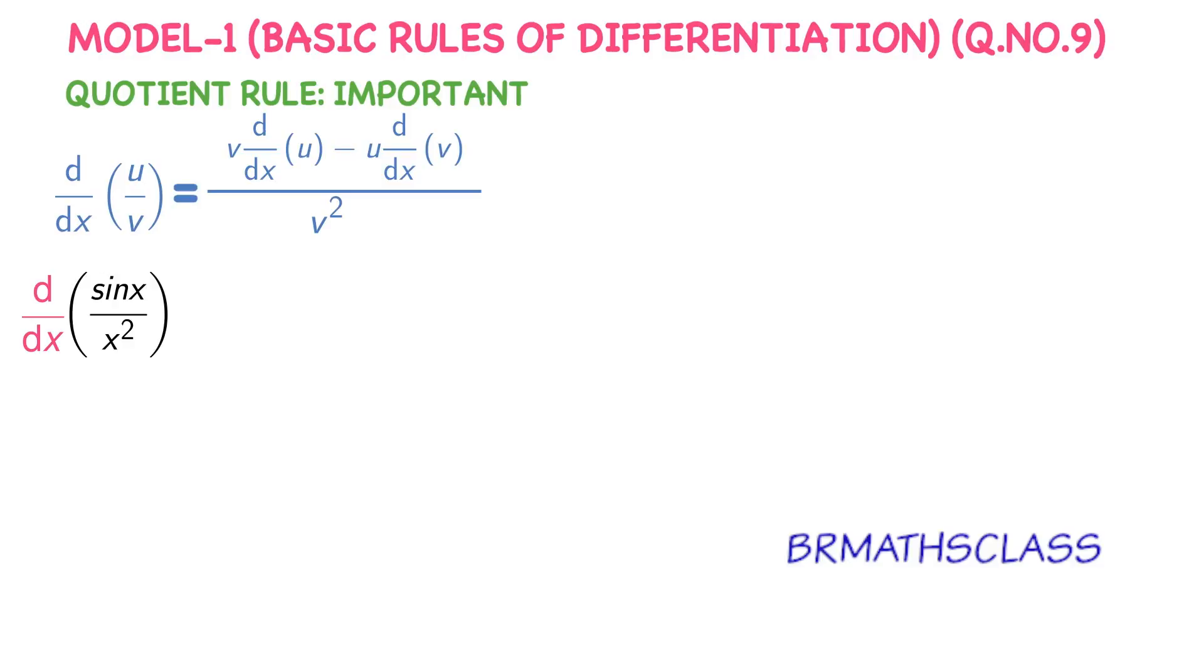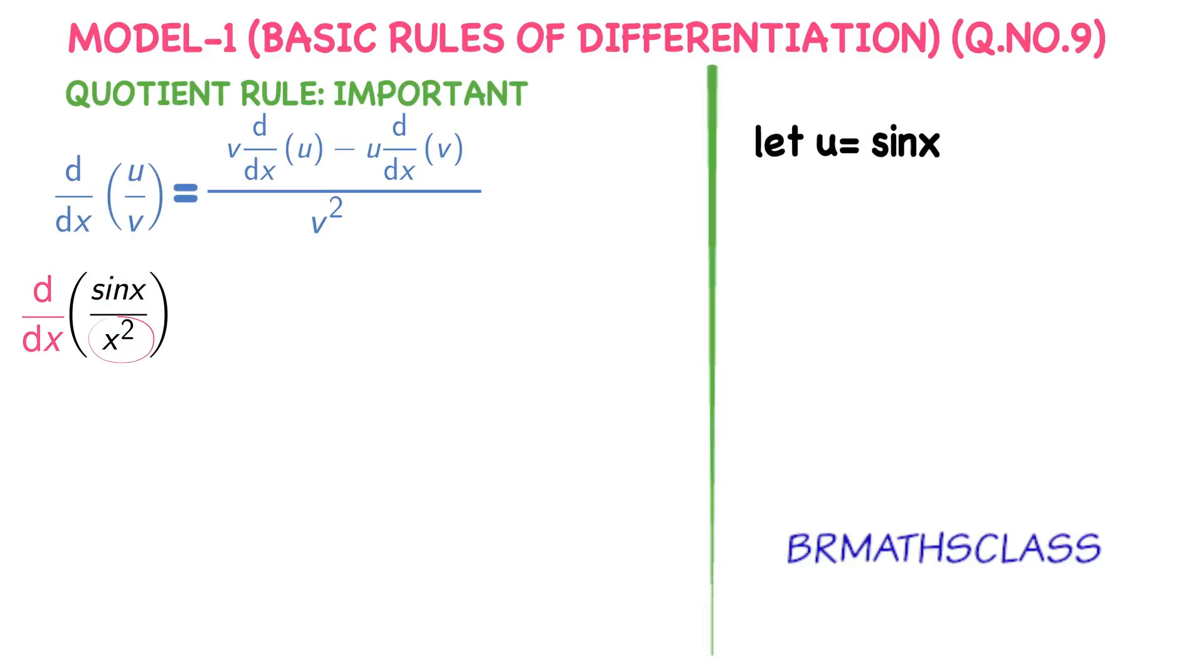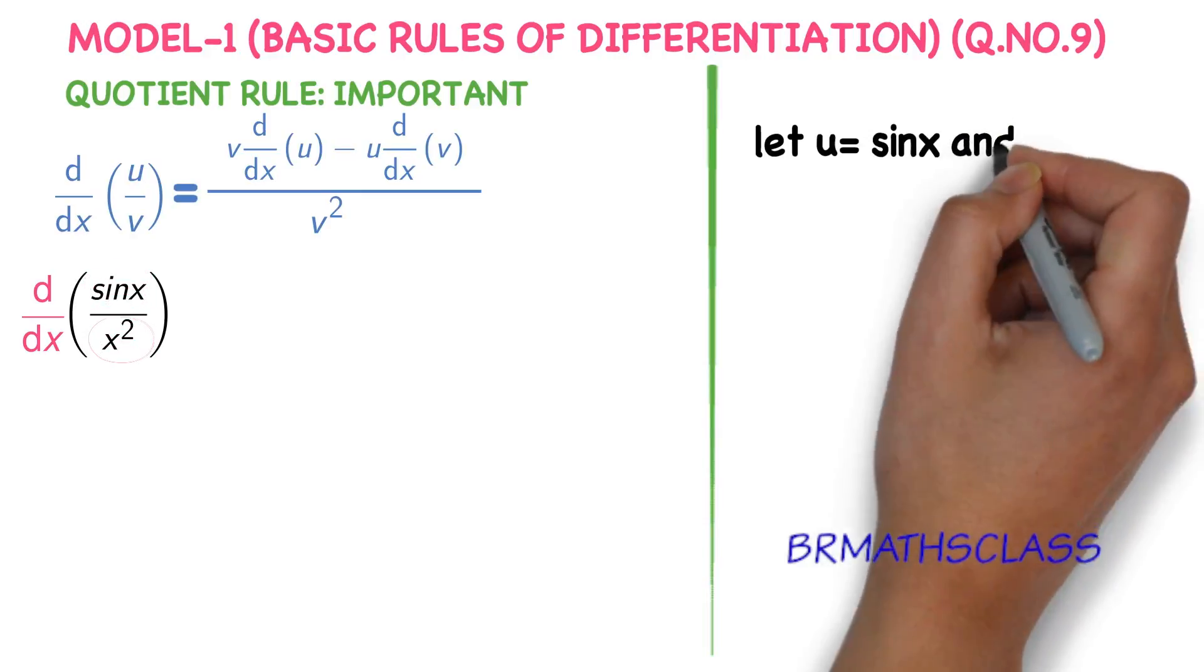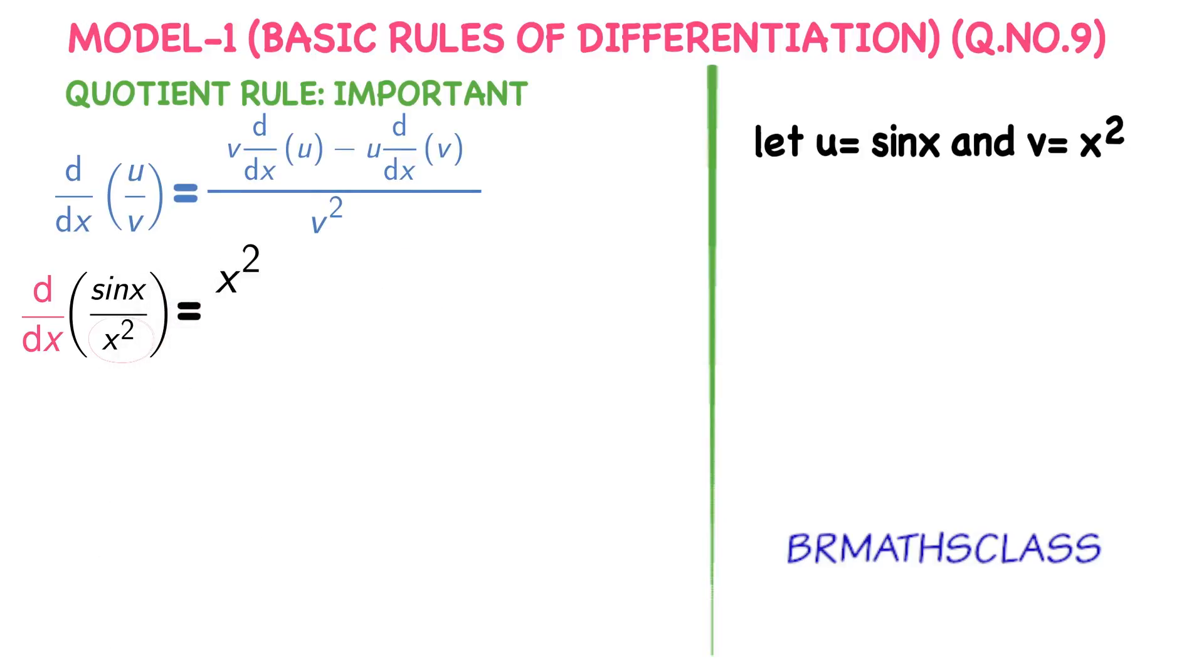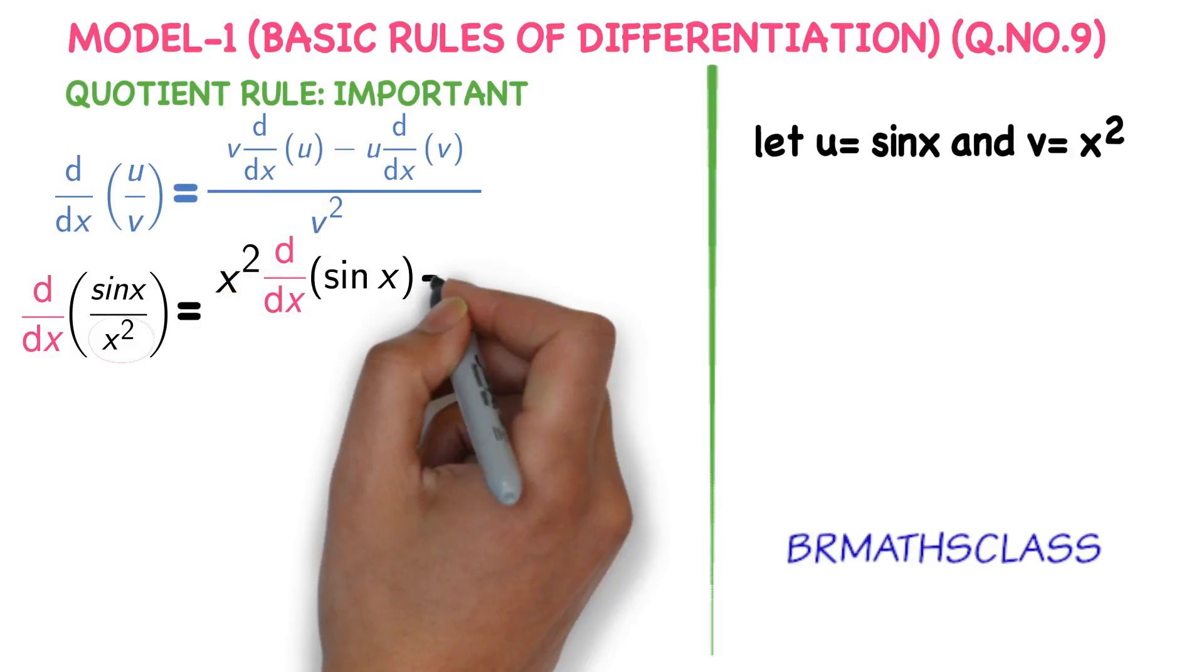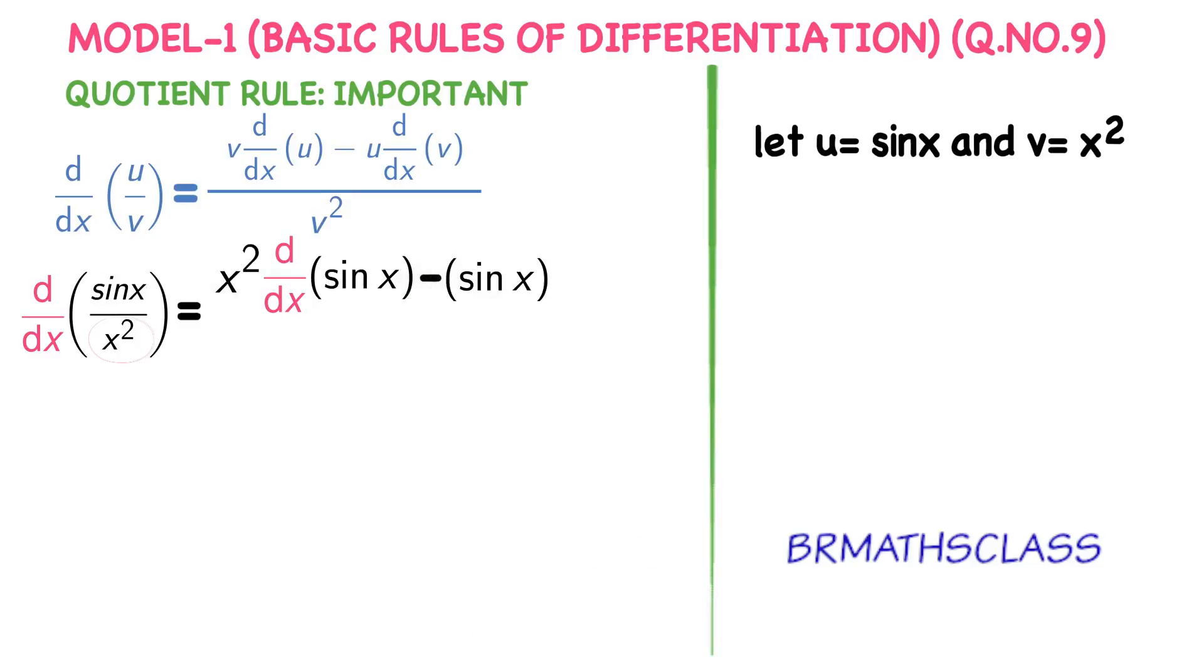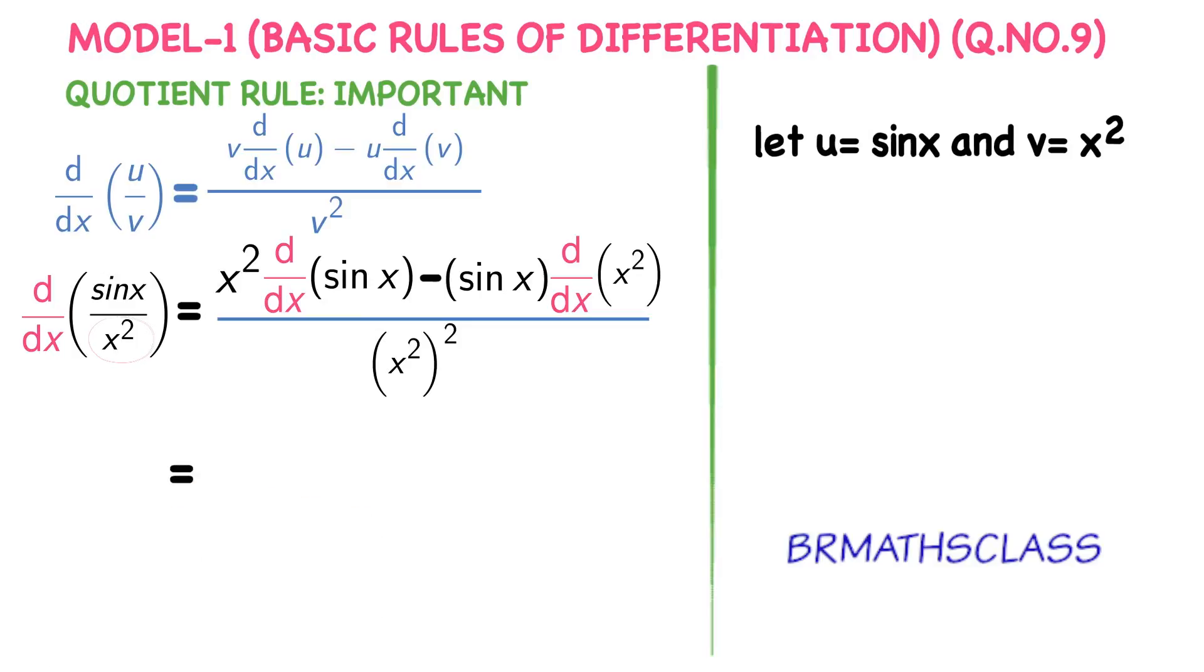You observe sin x by x square is of the form u by v. Sin x you take it as u and x square you take it as v. Derivative of u by v: v is x square into derivative of u minus u, which is sin x, into derivative of v divided by v square.